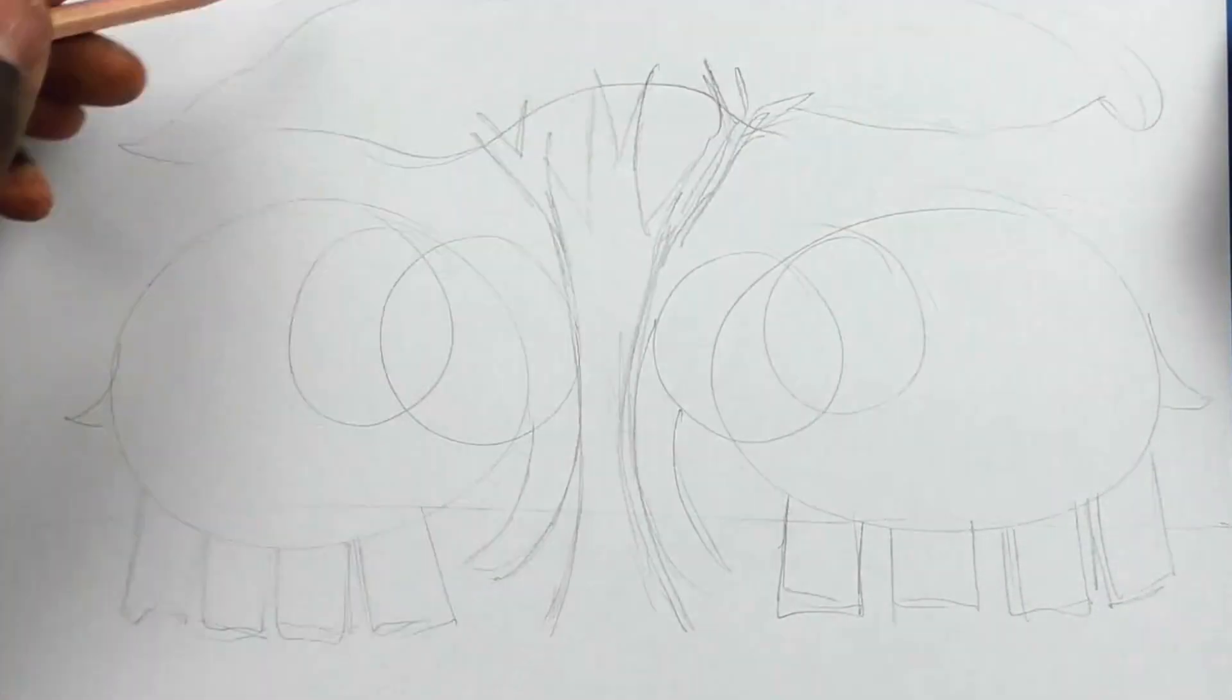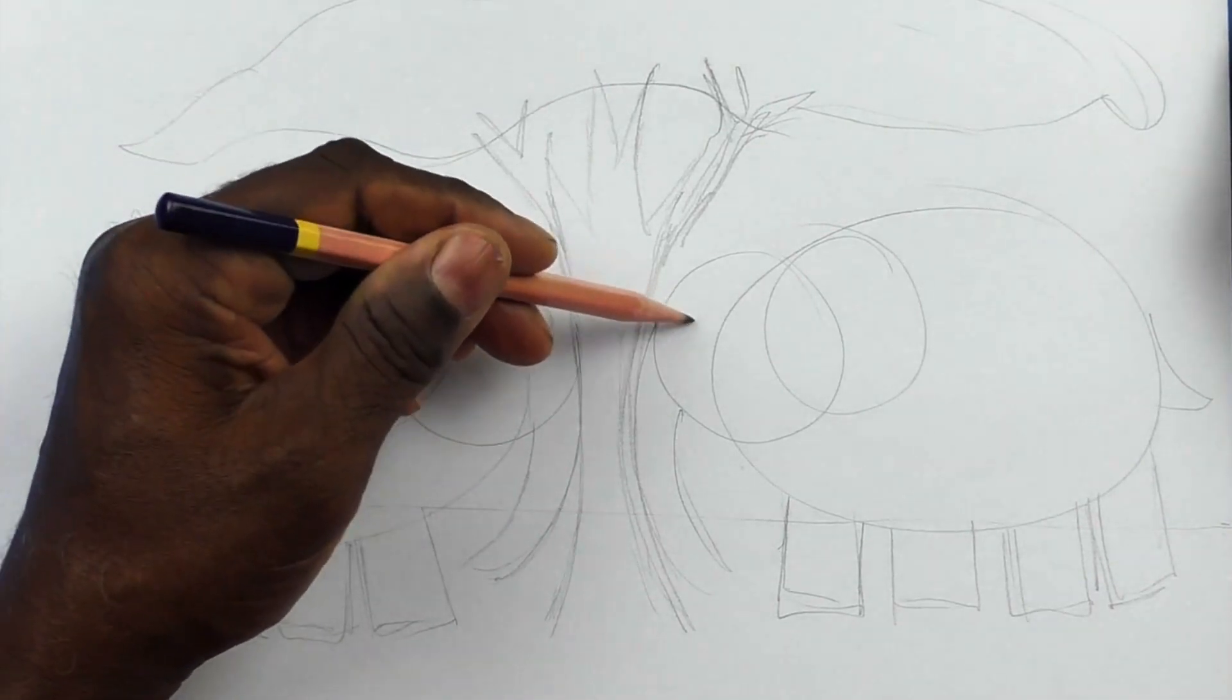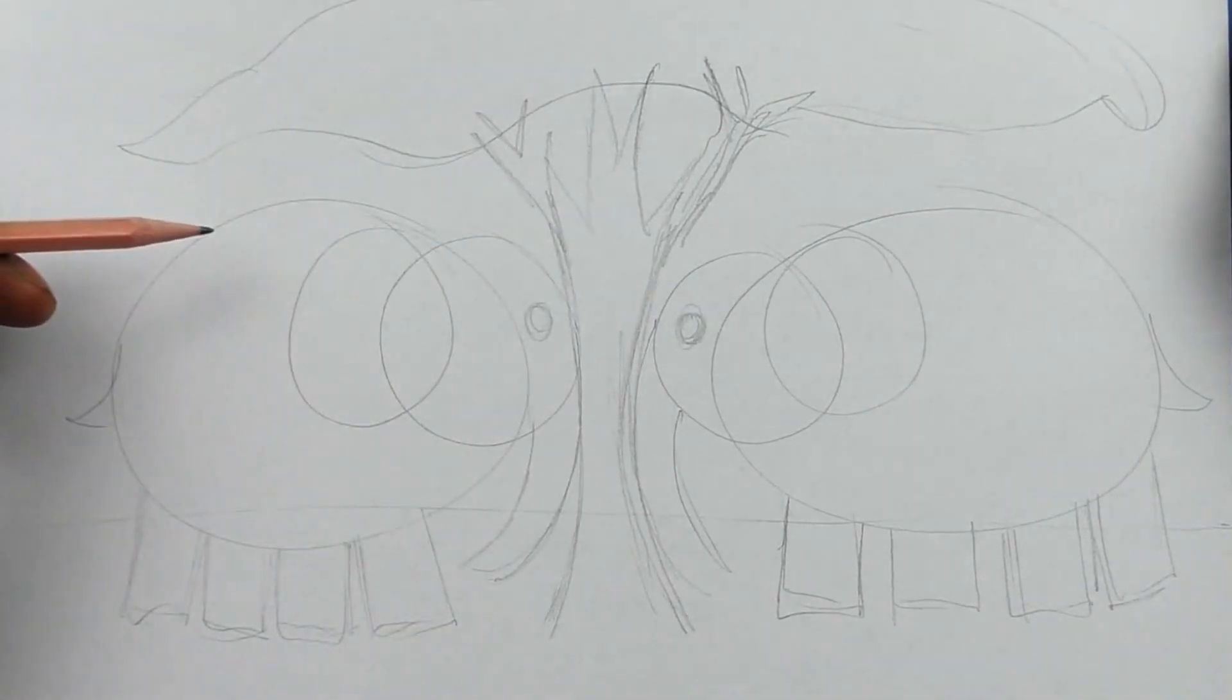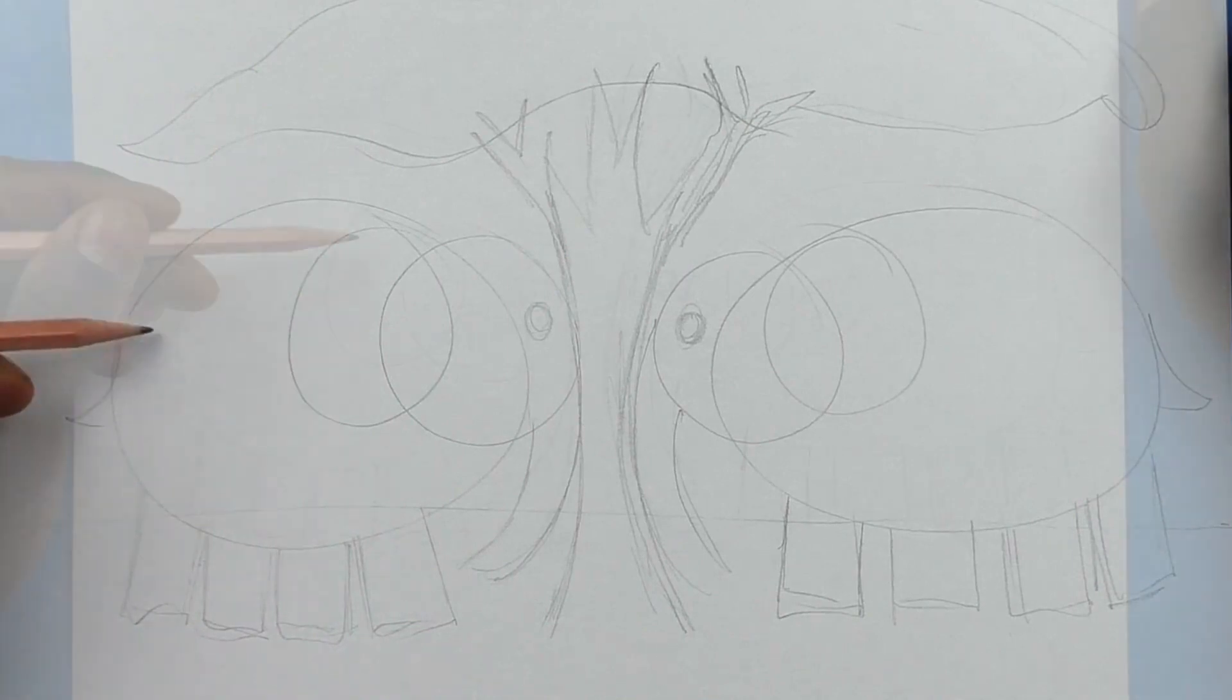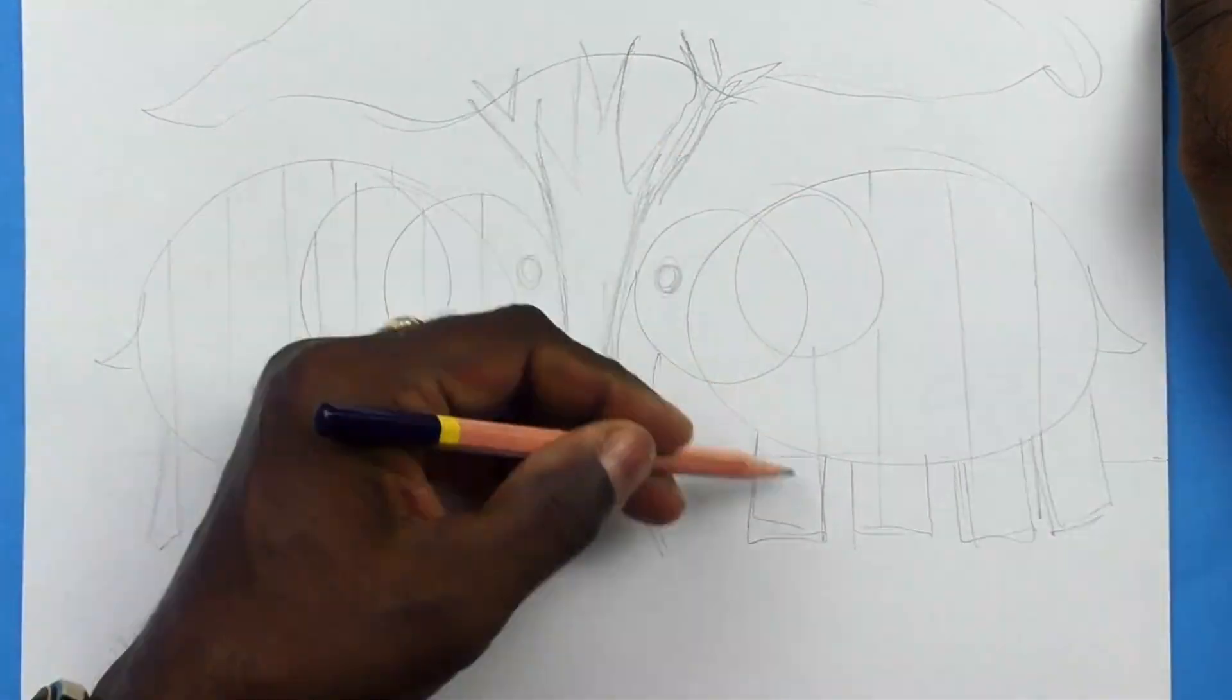So inside the large circle we're going to put two ovals for Elmer and Wilbur. And then we're going to start making vertical lines on their bodies.